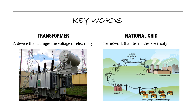Let's look at some key words. Transformer: a device that changes the voltage of electricity. National grid: the network that distributes electricity.